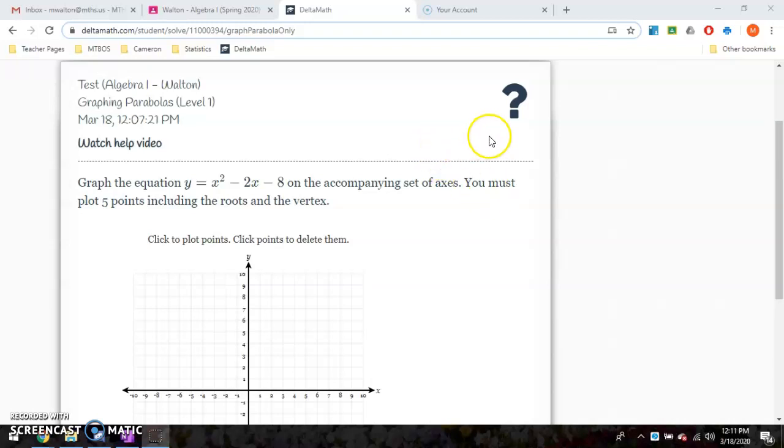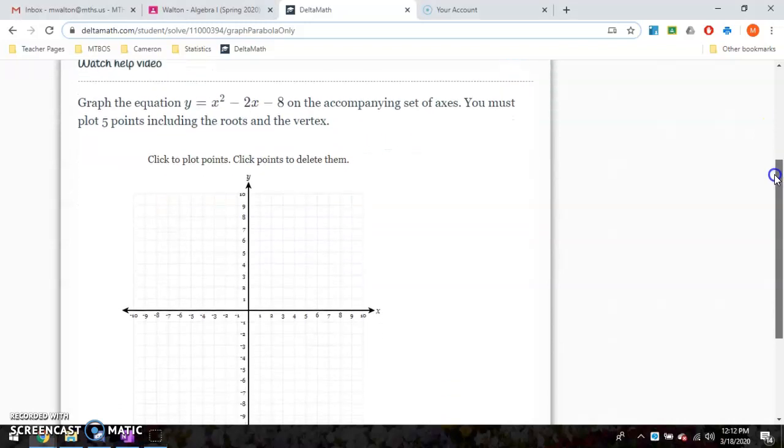One thing I did want to do for you today is to go over an example of one of these Thursday problems. One of the Thursday problems, they are asking you to graph the equation on the accompanying set of axes. You must plot five points including the roots and the vertex.